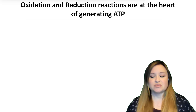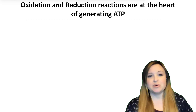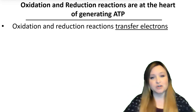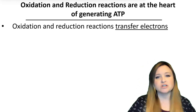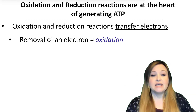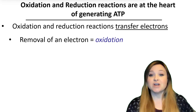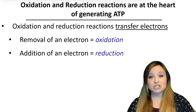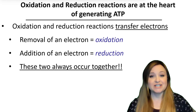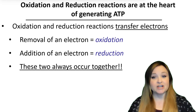Oxidation and reduction reactions are at the heart of generating ATP. Oxidation and reduction reactions transfer electrons — electrons become transferred from one molecule to another. The removal of an electron is called oxidation, and the addition of an electron is called reduction.